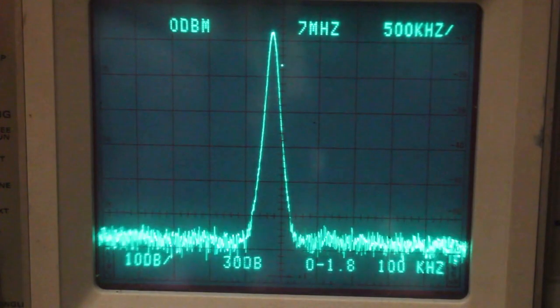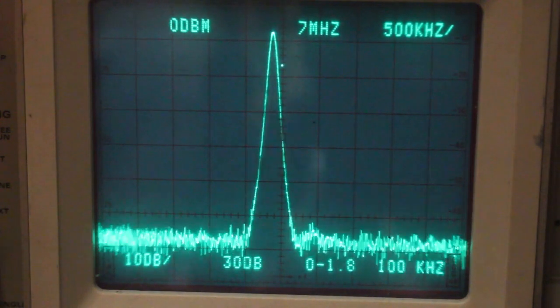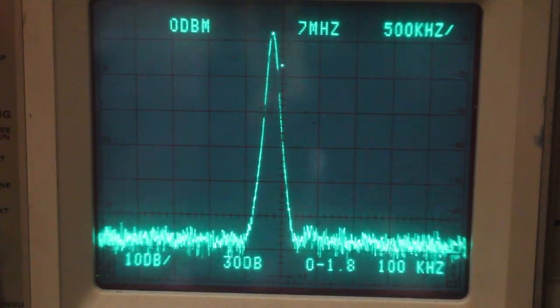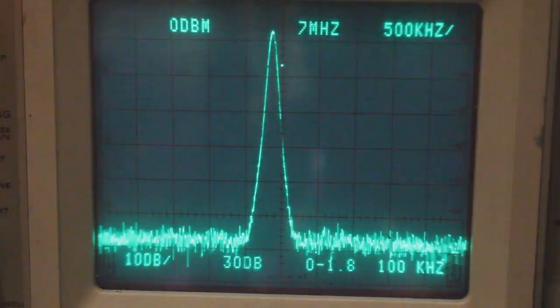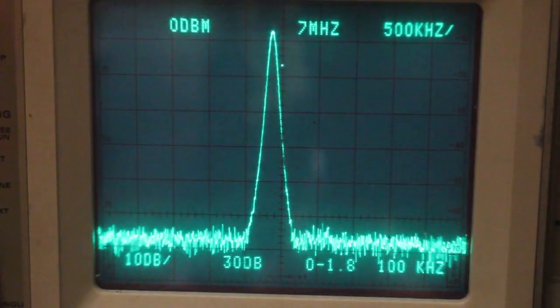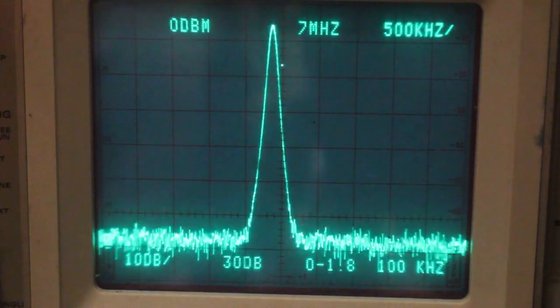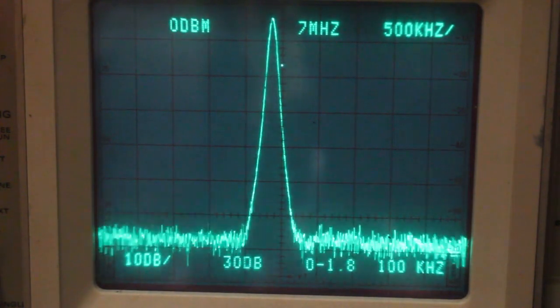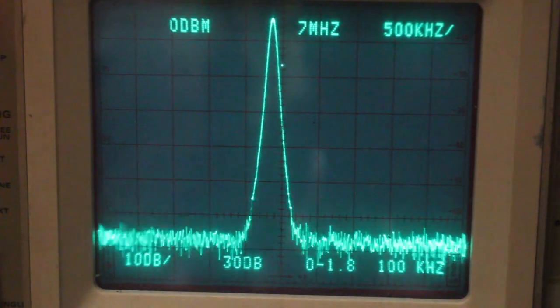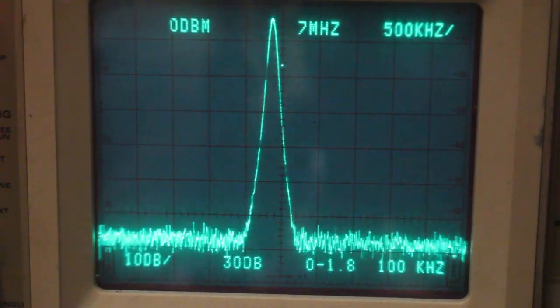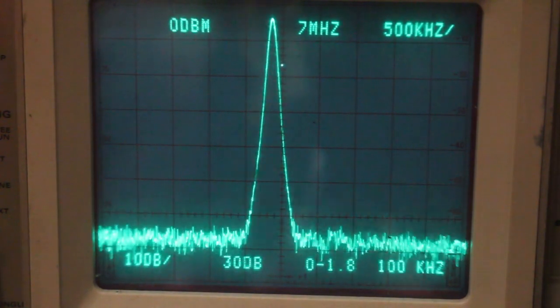We're looking at a 7 MHz dual gate MOSFET preamp. It's set up with adjustable bias to the second gate to adjust the gain. Right now I've got it set at maximum gain, just a little bit below 0 dBm, and it's actually being fed about -20 dBm, so almost 20 dB of gain.